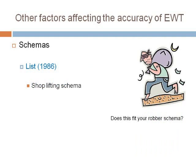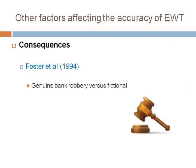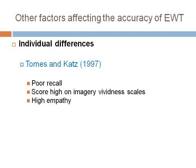Schemas can also influence the accuracy of eyewitness testimony. People tend to remember what they think will fit with their previous experience. List, for example, did an investigation where participants were more likely to recall events from a shoplifting scene if they were consistent with what they would expect to find at that scene. Knowing whether your recall will affect a real crime can also affect accuracy. Foster et al. found that if participants were told that the video of a bank robbery they were watching was real and that a conviction could be based on it, they were more likely to be correct in their recall. Research has also focused on individual differences and their effects on the accuracy of eyewitness testimony.